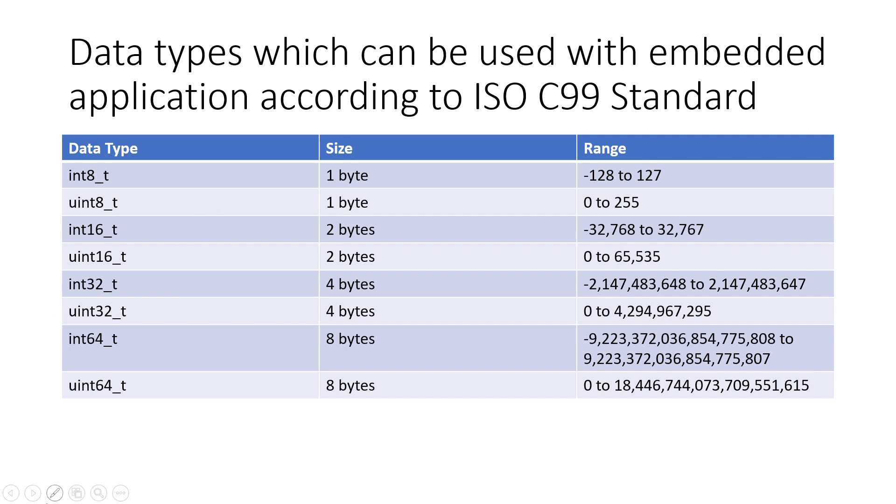To avoid this and make code cross-platform compatible, embedded programmers fix the memory. If you see int8_t, this will allocate only 8 bits of memory irrespective of platform or hardware. Similarly, uint8_t, int16_t, uint16_t, int32_t, uint32_t, int64_t, uint64_t. Based on the range you're working with, you can choose the data type to optimize memory performance.